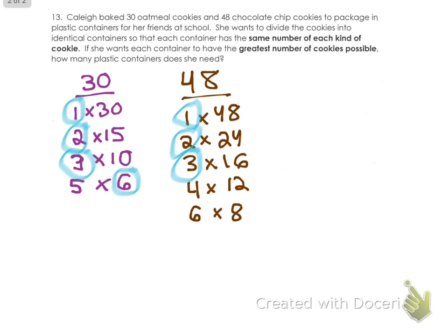And what is our greatest number going to be there? Our greatest out of both of them would probably be 6. 6 is our largest number. So that means that she would be able to make 6 containers of cookies. So she hopefully has 6 friends that she's giving it to. 6 containers of cookies.